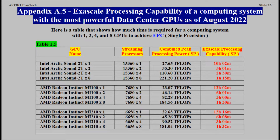Appendix A5. Exascale Processing Capability of a Computing System with the Most Powerful Data Center GPUs, as of August 2022.